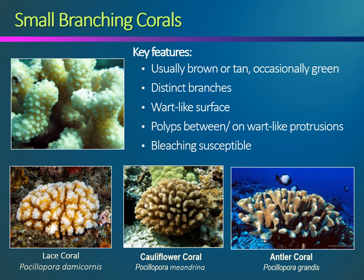Small branching corals are one of the most common coral types in the Hawaiian Islands. Included in this category are lace coral, cauliflower coral, and antler coral. This coral type includes small, round colonies with distinct branches. Colonies are typically brown, tan, or cream colored, and more rarely light green. Up close, these corals have wart-like protrusions along their surface, with polyps positioned in between and on top of these protrusions. Small branching corals have been highly susceptible to thermal stress and bleaching events in recent years. Populations have declined dramatically in some areas, including West Hawaii Island, following the 2015 bleaching event, although recruitment and recovery has been documented in recent years.